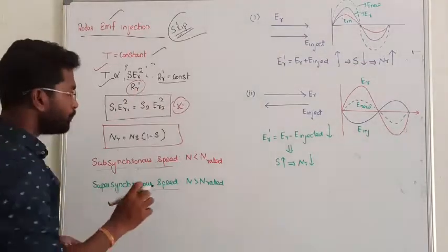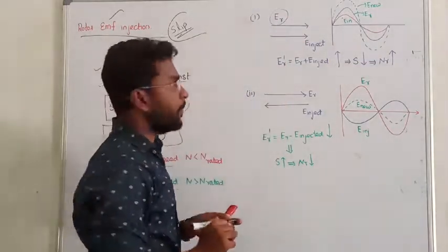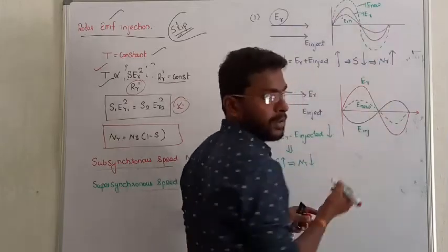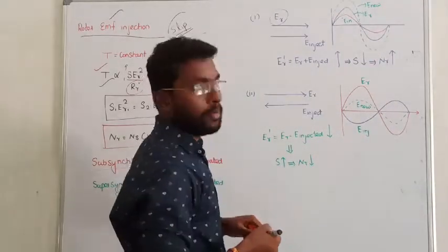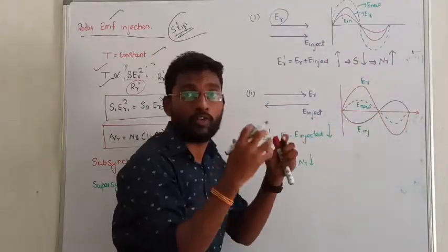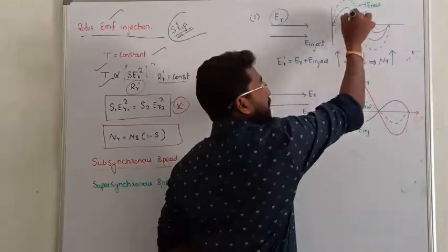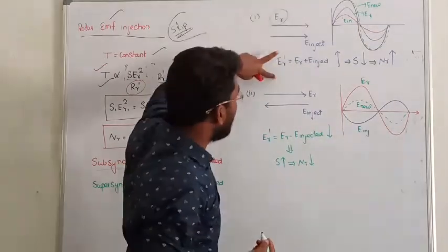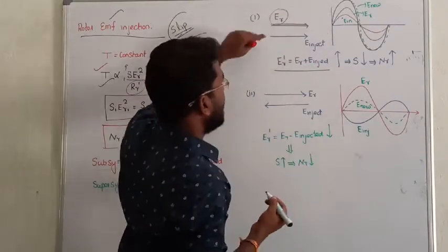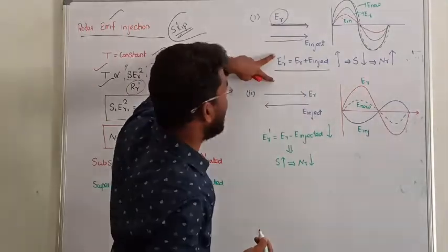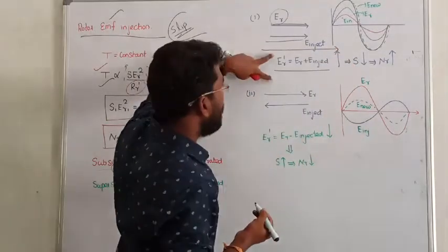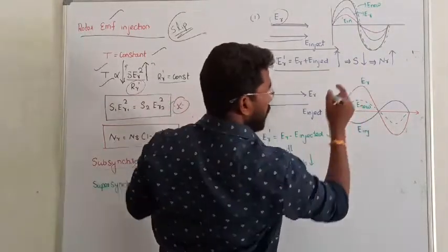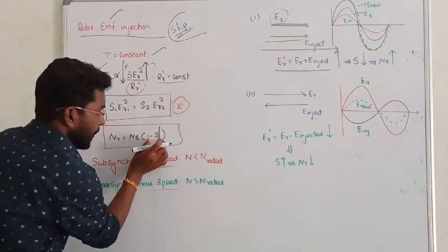Let us take case number one. Assume this is my initial rotor circuit. The rotor already has some induced EMF — shown in blue color, this is my induced EMF. If we inject some additional EMF from an external source into the rotor circuit in the same phase direction, the two EMFs add up. The resultant EMF value of the rotor increases beyond the rated value. To maintain the torque constant, we must reduce the slip. As slip reduces, the rotor speed will obviously increase — that is called super-synchronous speed.